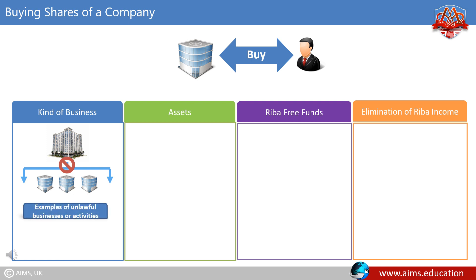Examples of unlawful businesses or activities are interest, insurance, and gambling.